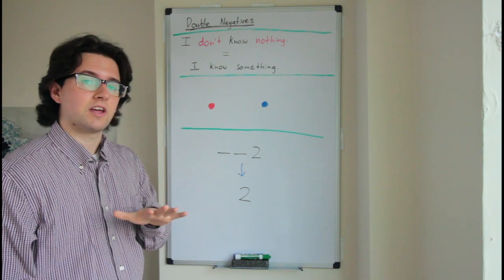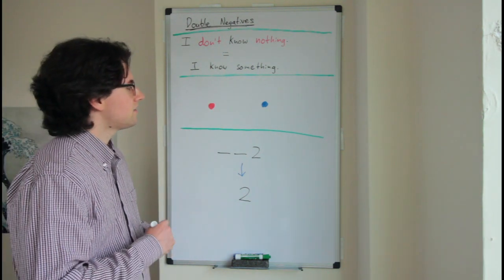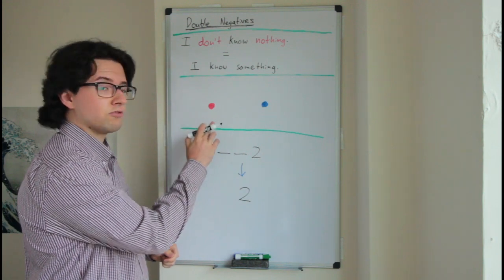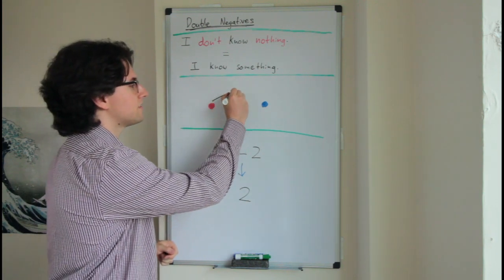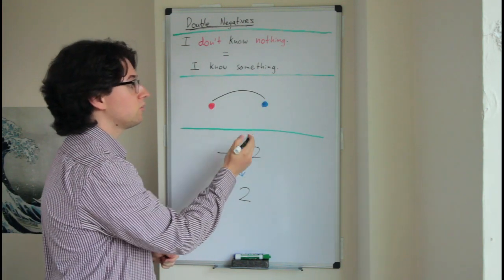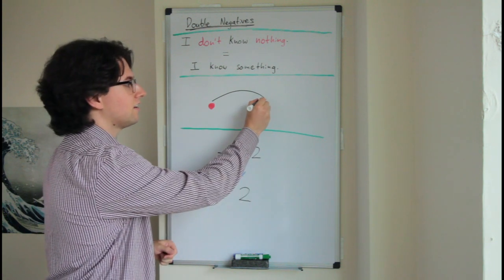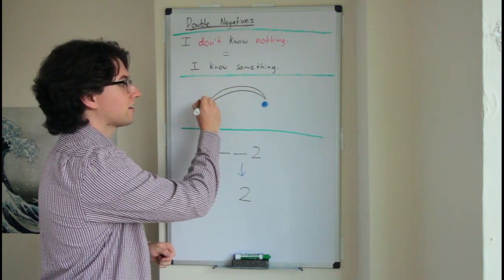It works the same way in math. Let's take a visual representation. Let's say that I start from the red dot and I go to the opposite side. Now I'm on blue, but if I go to the opposite side of blue, I go back to where I started.